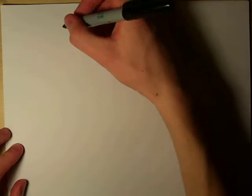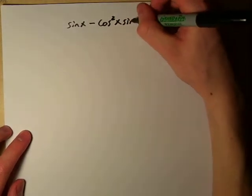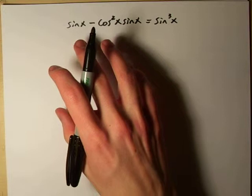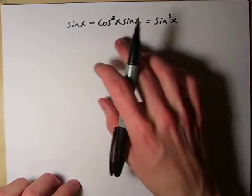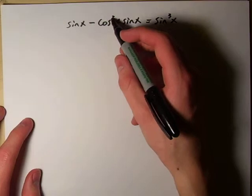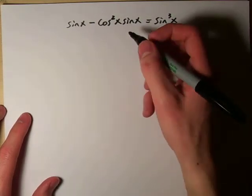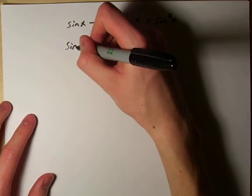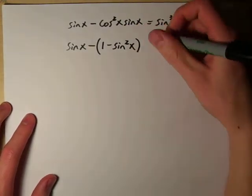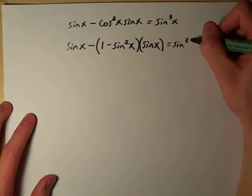We start with something like sine x minus cosine squared x times sine x equals sine cubed x. We have cosines on our left-hand side and we want to get everything in terms of sine. We can take cosine squared x and find its sine equivalent using our Pythagorean identity, which is 1 minus sine squared x. So I'll fill that in: sine x minus (1 minus sine squared x) times sine x equals sine cubed x.